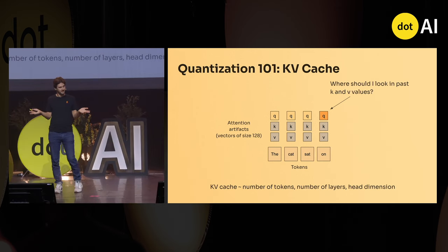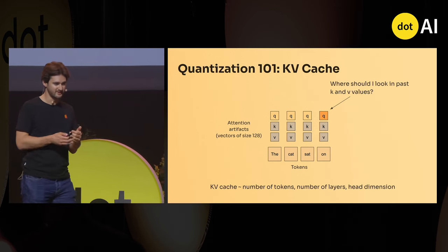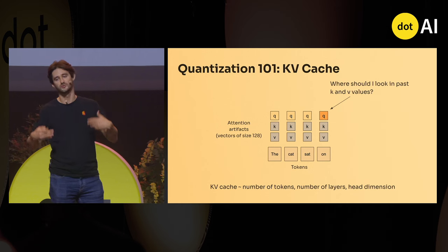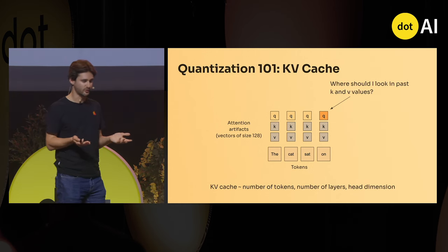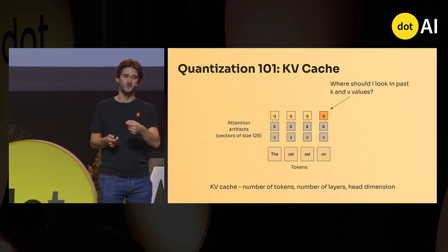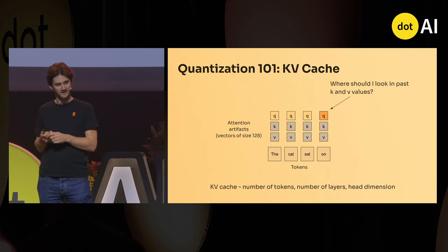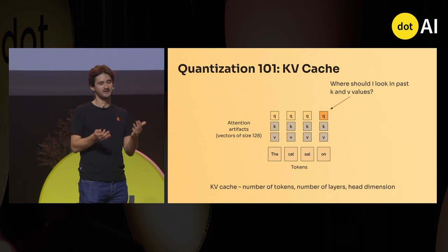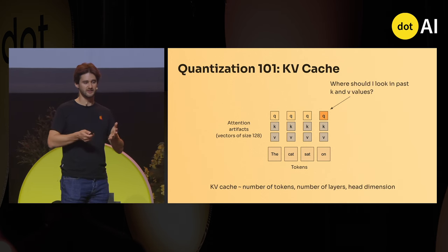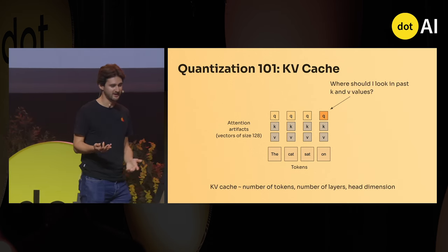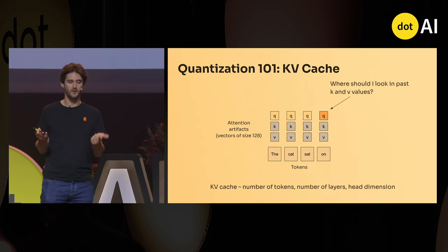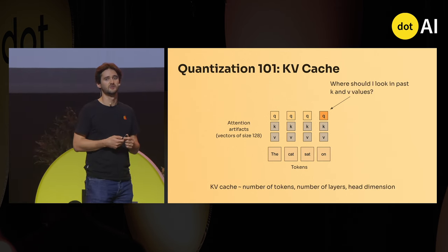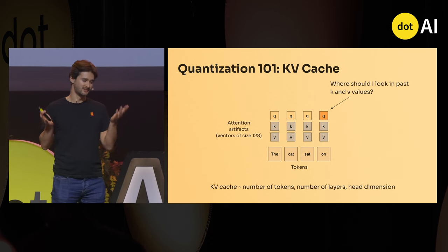So you take the query of only the last token, do the dot product with all the past key values — that tells you where to put your attention — and then weight with the value V. That's the attention. The problem is, if you do it naively, you would recompute K and V for all past tokens every time you reprocess the sentence, so the cost grows — you get slower and slower at predicting tokens. So you trade compute for memory and cache K and V on the GPU — that's the KV cache. It scales with number of tokens, number of layers, and head dimension — canonically 128.